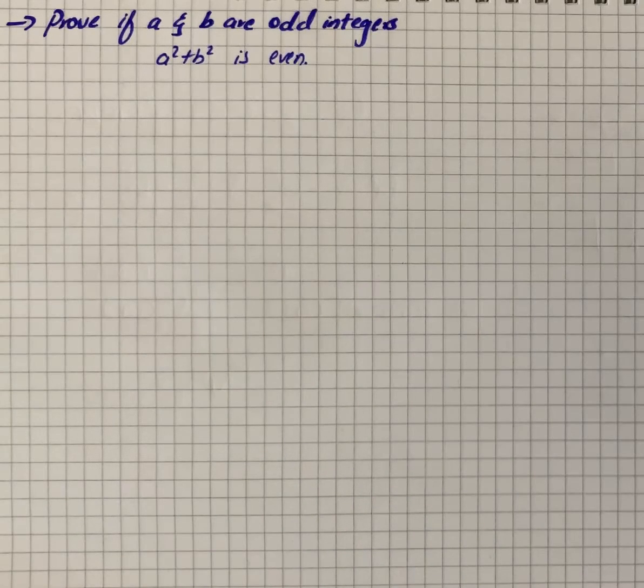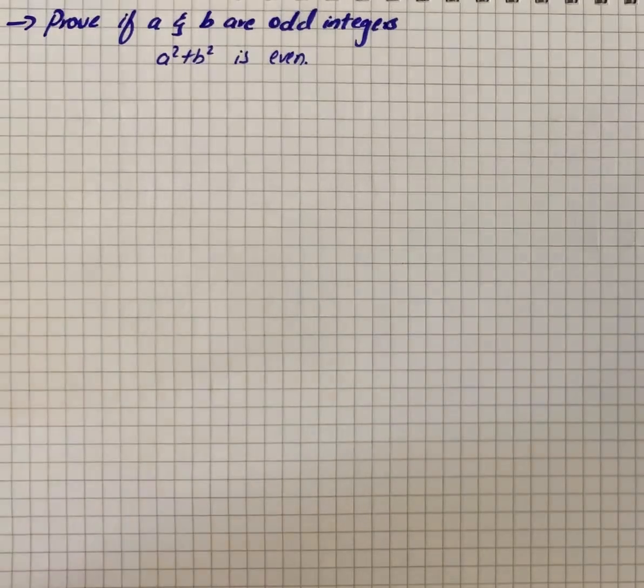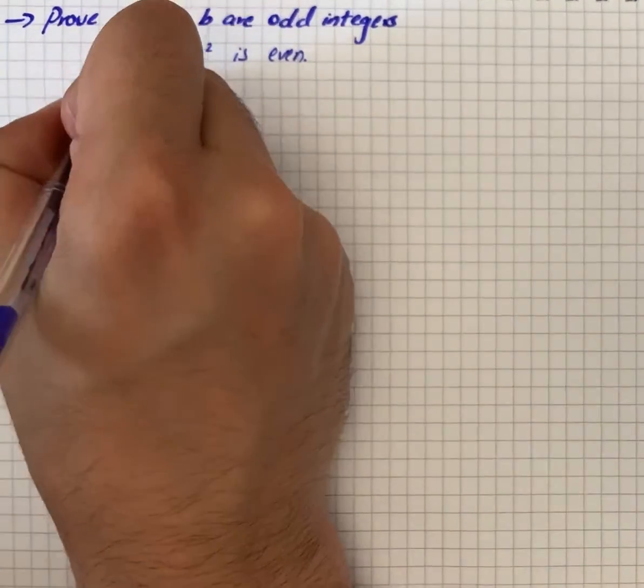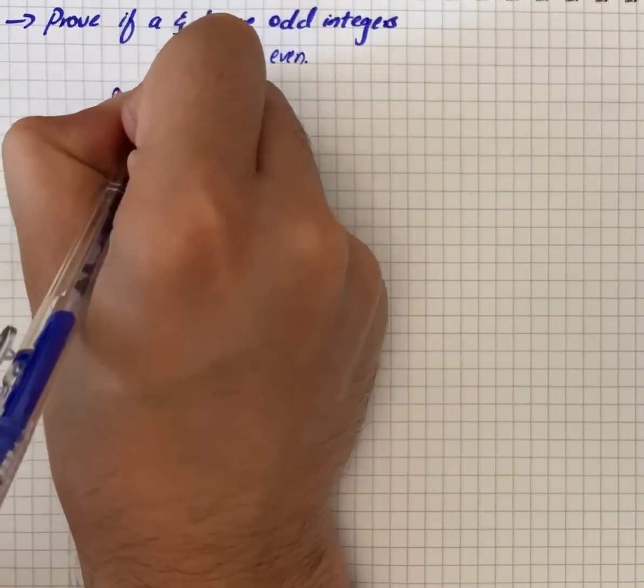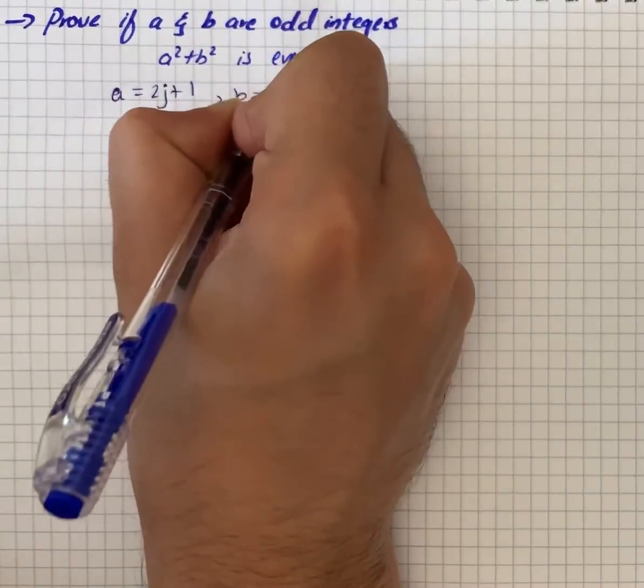Here we have a question that says prove if a and b are odd integers, then a² + b² is even. So let two positive numbers be a = 2j + 1 and b = 2k + 1.